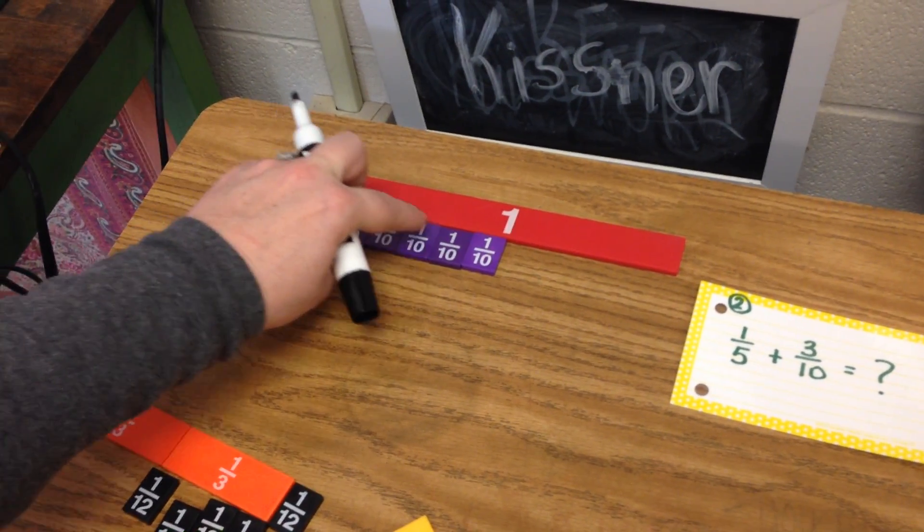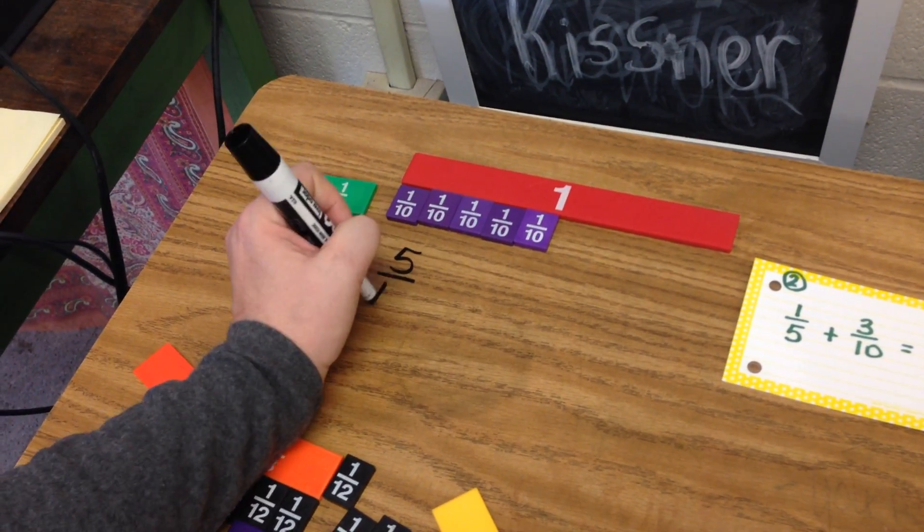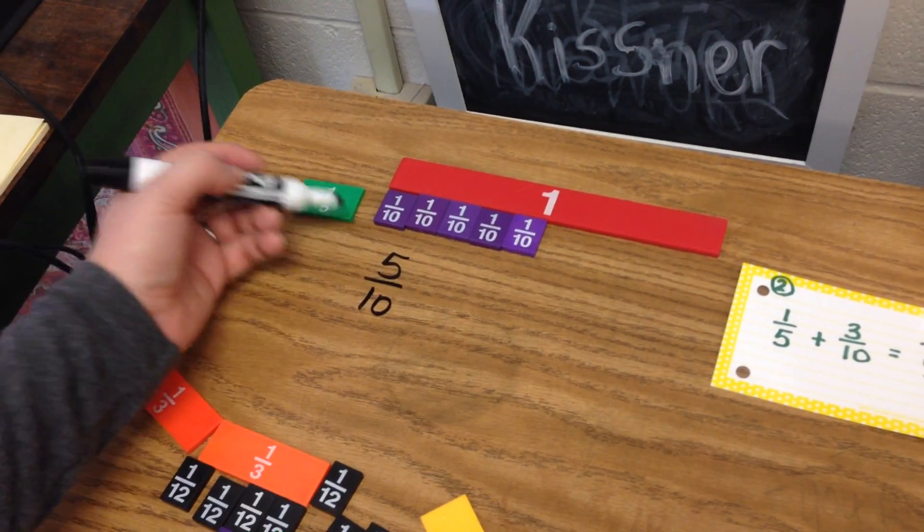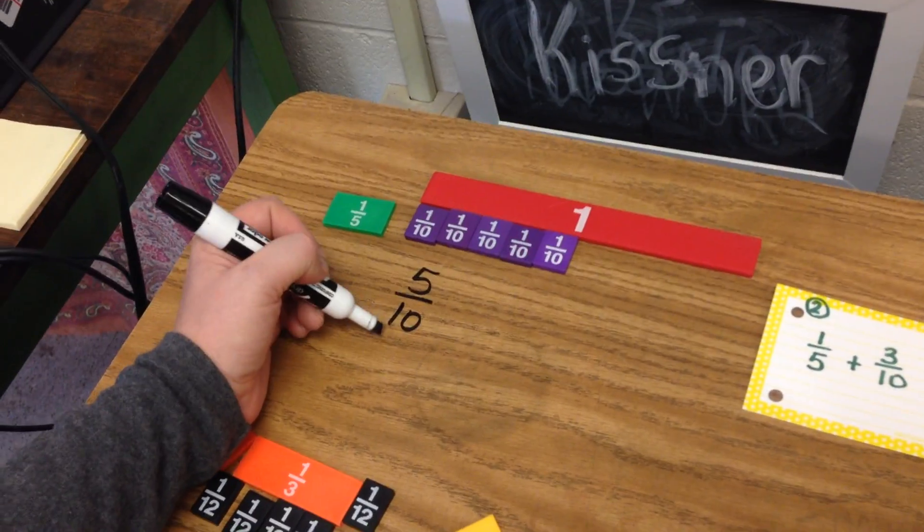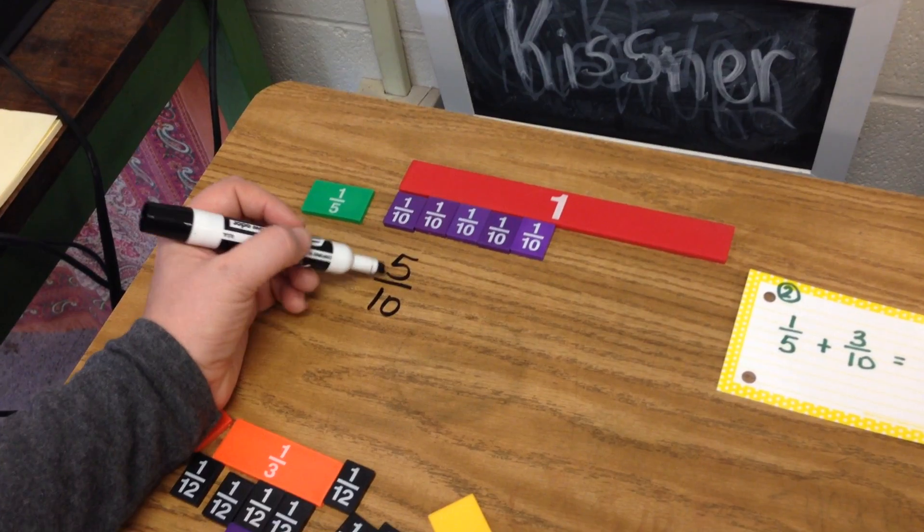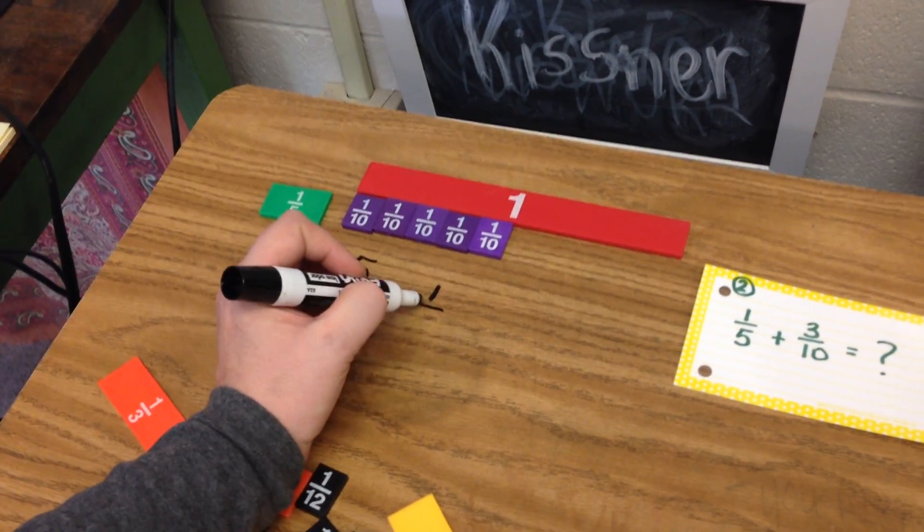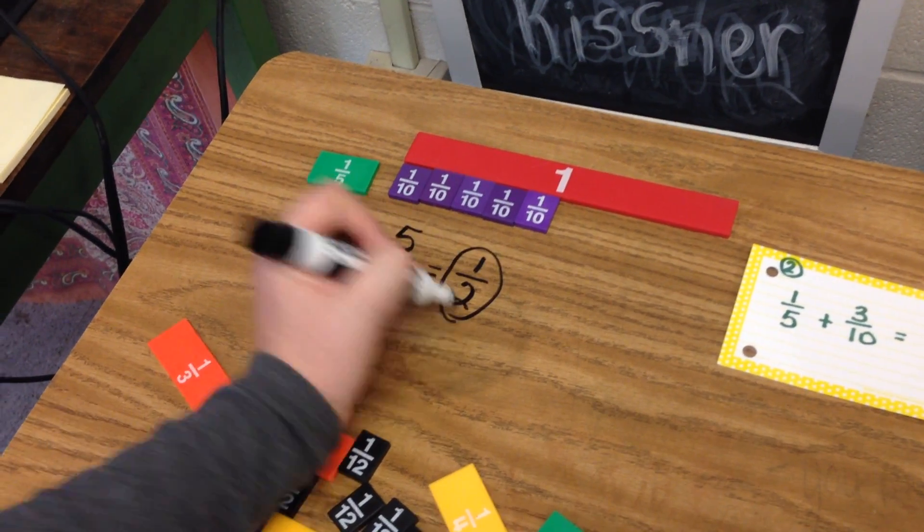Now I have one, two, three, four, five-tenths. And then you want to see if there's anything that would go evenly into both of these. Quick fix for this one. I know that five is half of ten. So anytime your numerator is half of your denominator, it will always come down to one half.